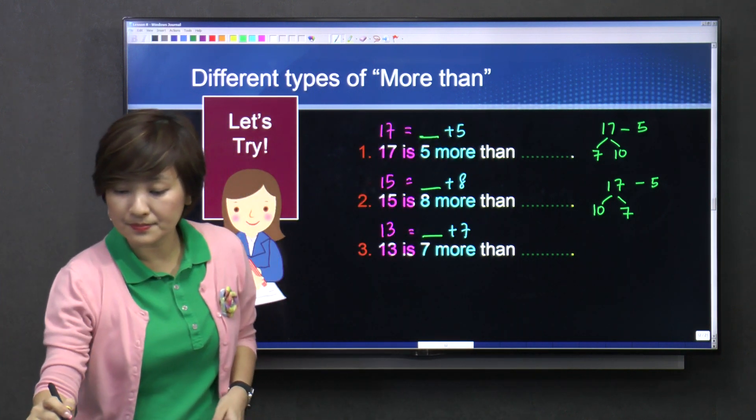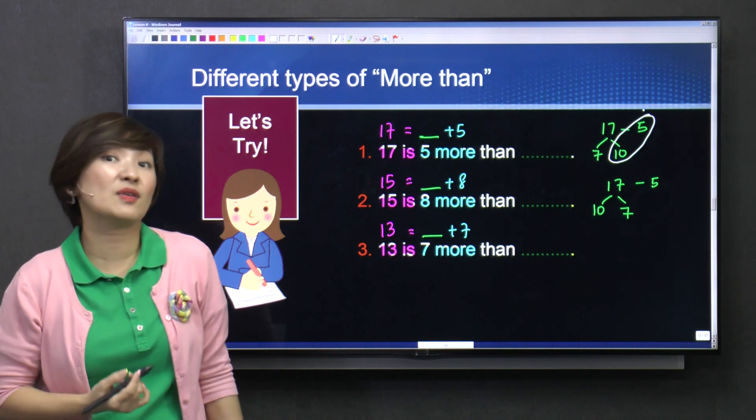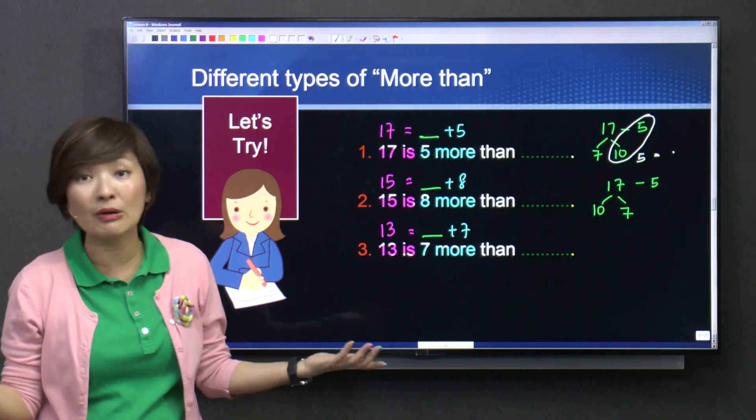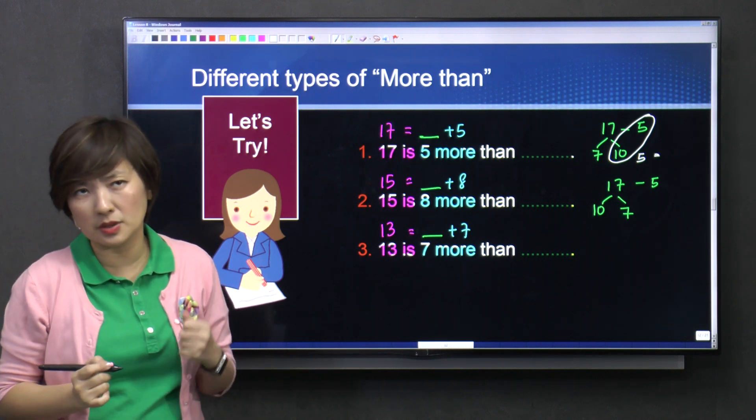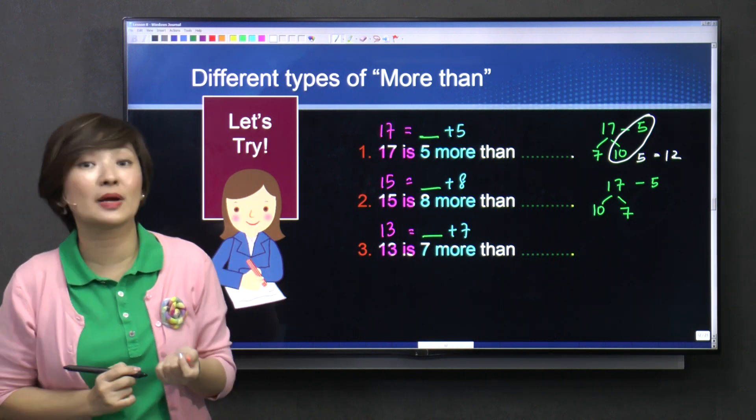Right? So, if I were to do this, ten minus five is very easy, so it's five. Then I take seven plus five, I might need to count a little bit. Seven plus five, seven, eight, nine, ten, eleven, twelve. Okay, I might have to count a little bit, so I get twelve.